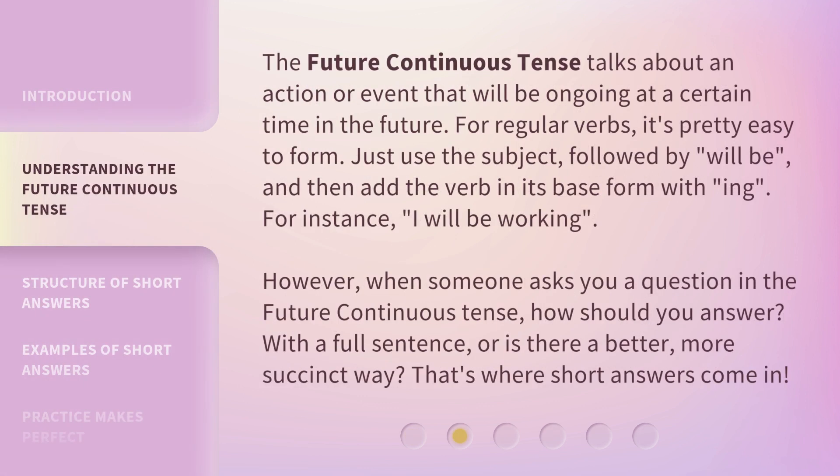The Future Continuous Tense talks about an action or event that will be ongoing at a certain time in the future. For regular verbs, it's pretty easy to form. Just use the subject, followed by 'will be,' and then add the verb in its base form with '-ing.' For instance: 'I will be working.' However, when someone asks you a question in the future continuous tense, how should you answer? With a full sentence, or is there a better, more succinct way? That's where short answers come in.